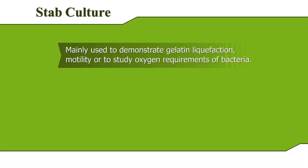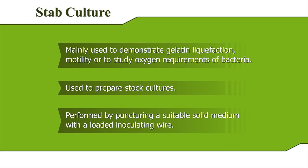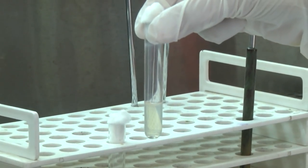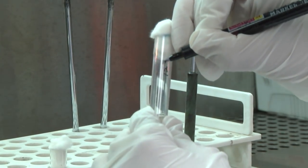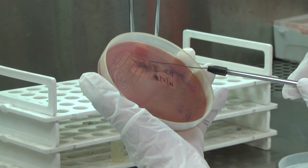Stab Culture. This method is mainly used to demonstrate gelatin liquefaction, motility, or to study oxygen requirements of bacteria. It is also used to prepare stock cultures. It is performed by puncturing a suitable solid medium with a loaded inoculating wire. Take a tube or bottle with an agar medium and label it before inoculating. Load the inoculum onto a sterilized inoculating wire.